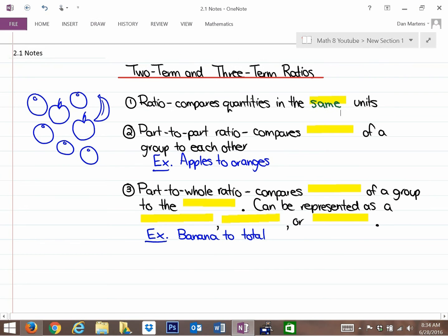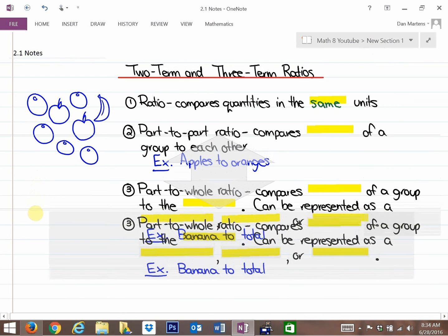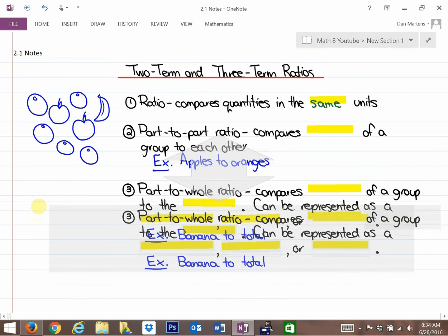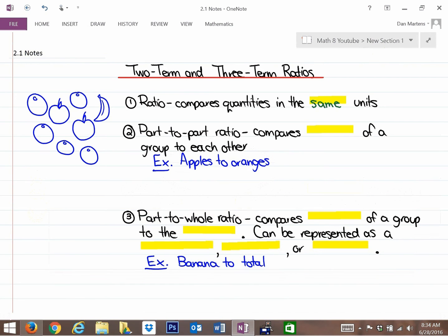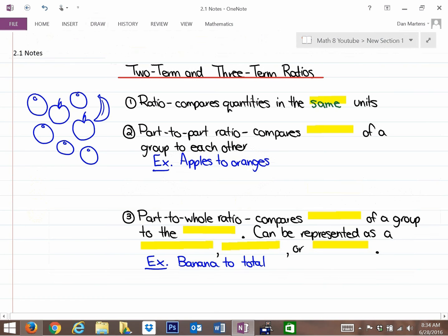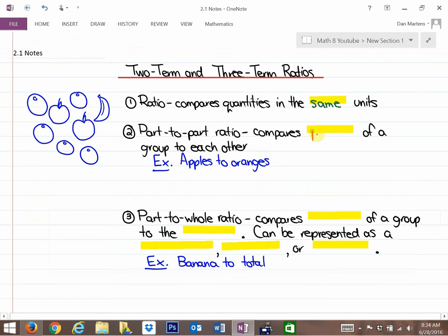Number two here is a part-to-part ratio, and a part-to-part ratio essentially compares parts of a group to each other. So if you look at this diagram here of the apples, oranges, and bananas, apples is a part of the diagram, oranges is a part of the diagram, and bananas are a part of the diagram.